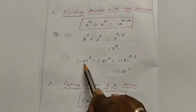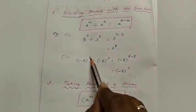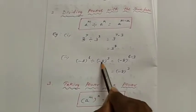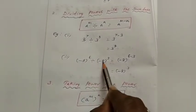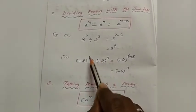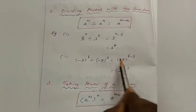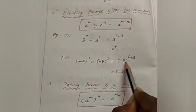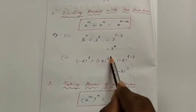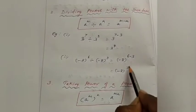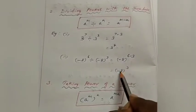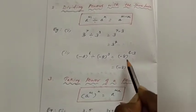The second example: minus 8 whole power 6 divided by minus 8 whole power 3. The bases are the same, it is division, so subtract the powers: minus 8 power 6 minus 3. Since 6 minus 3 equals 3, the answer is minus 8 whole power 3.